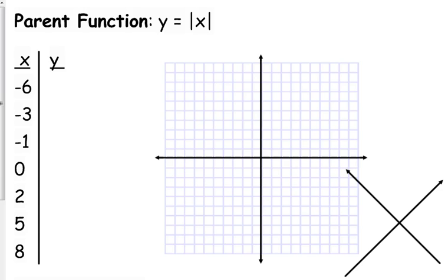The absolute value function takes negative values and makes them positive. So if x is negative 6, then the y value is going to be positive 6, and we can graph that — we can plot that point there.